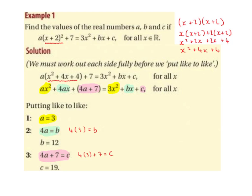Lastly, we let 4a plus 7 equal c, because 4a plus 7 is the constant on the left-hand side of the equals, and c is the constant on the right-hand side. Although they have a's and c's involved, they don't have any x's, so in that way they are constants. We let 4a plus 7 equal c. We swap the a for 3: 4 multiplied by 3 plus 7 equals c. 4 times 3 is 12, and 12 plus 7 is 19. So c is equal to 19.